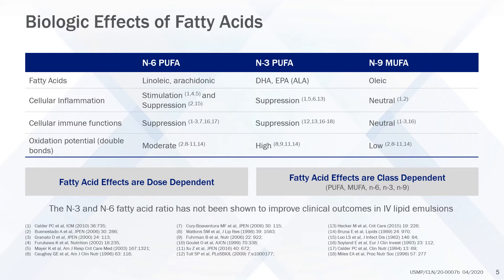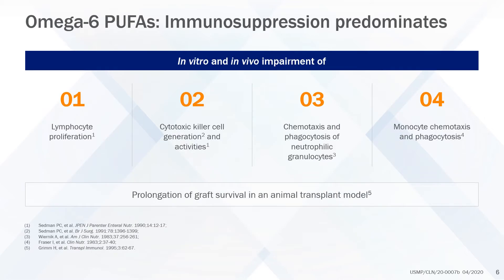Importantly, products of lipid oxidation may damage tissues within the body. A variety of studies indicate that N6 PUFAs are immunosuppressive. There are decreases in lymphocyte proliferation, cytotoxic killer cell generation and function, chemotaxis, and phagocytosis. There is also prolongation of graft survival in animal transplant models.